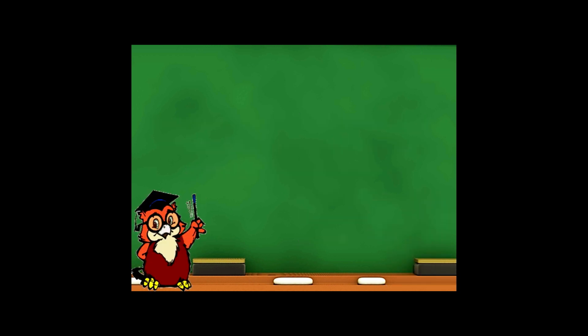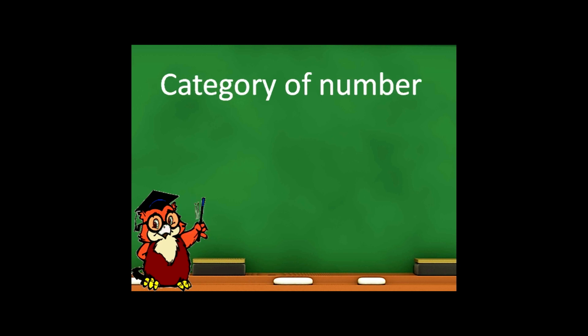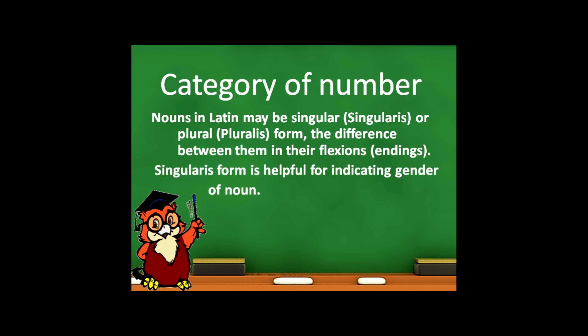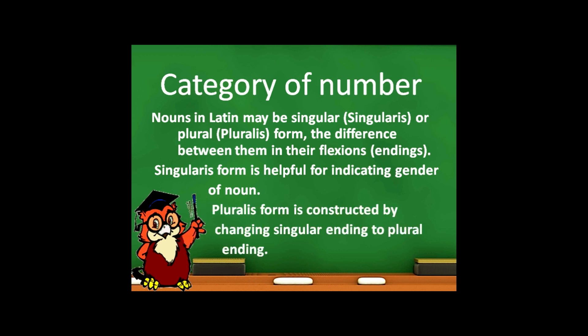Category of number. Nouns in Latin may be in singular or plural form. The difference between these two forms is in their flexions. The singularis form is helpful for indicating the gender of a noun. The pluralis form is constructed by changing the singular ending to the plural ending.